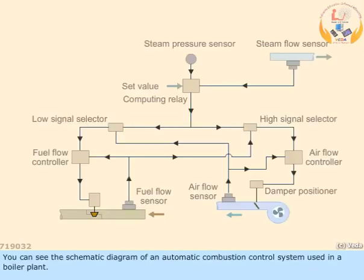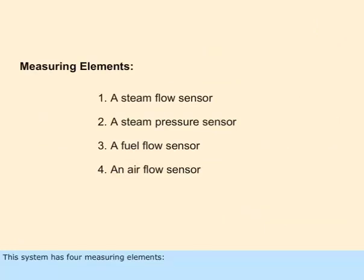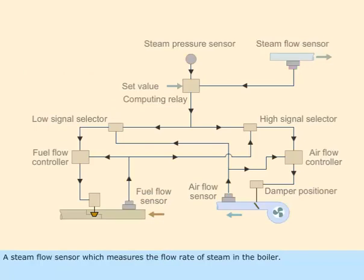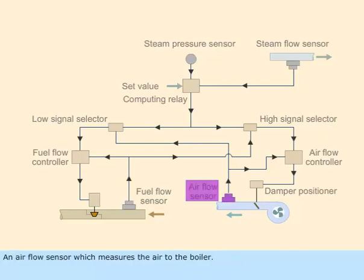You can see the schematic diagram of an automatic combustion control system used in a boiler plant. This system has four measuring elements: a steam flow sensor which measures the flow rate of steam in the boiler, a steam pressure sensor which measures the pressure of steam in the boiler, a fuel flow sensor which measures the fuel flow to the boiler burner, and an air flow sensor which measures the air flow to the boiler.